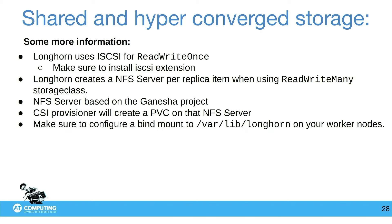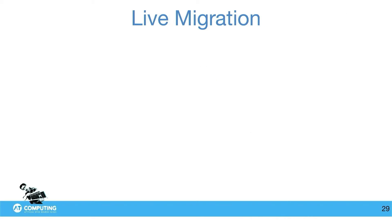Make sure to do a bind mount in /var/lib/longhorn for your worker nodes — if you don't do that, it doesn't work. Longhorn was very simple for me to deploy. I've deployed it multiple times, also in enterprise environments, and Longhorn was ready to use.